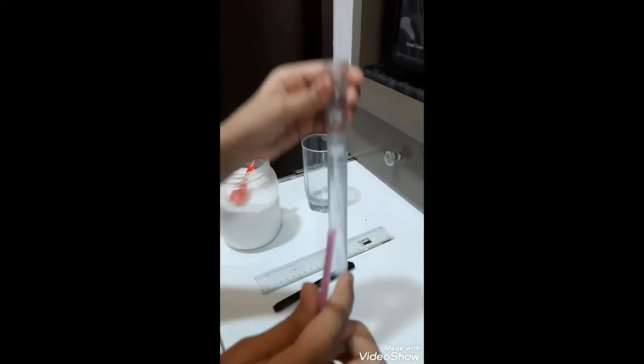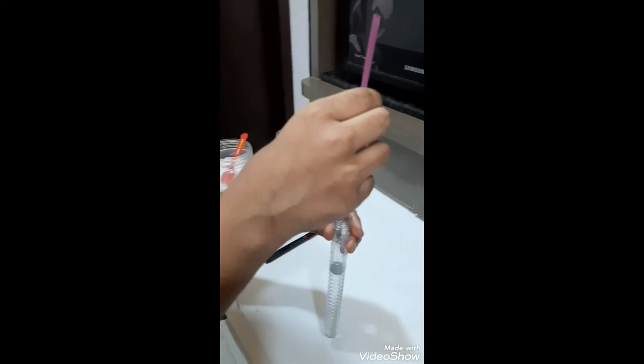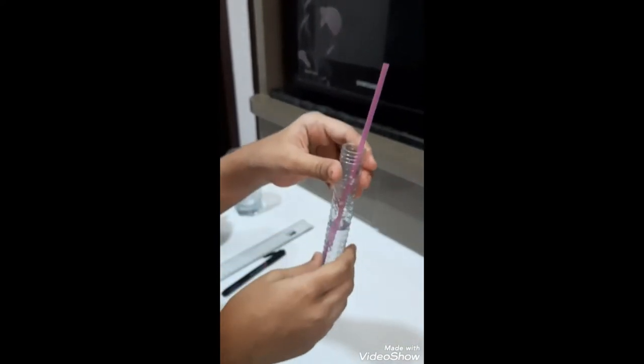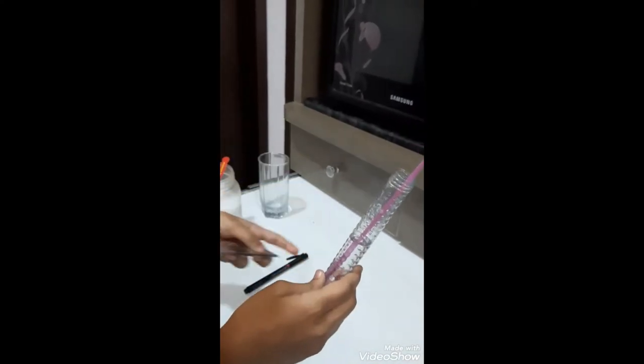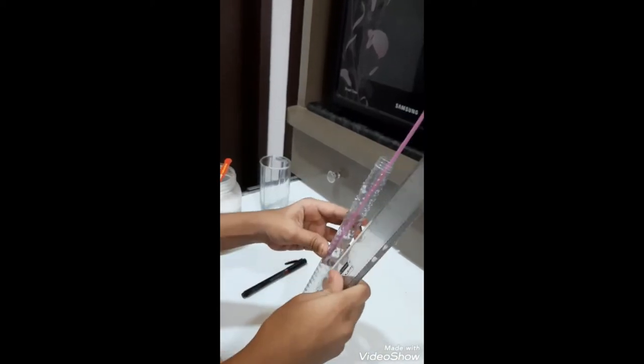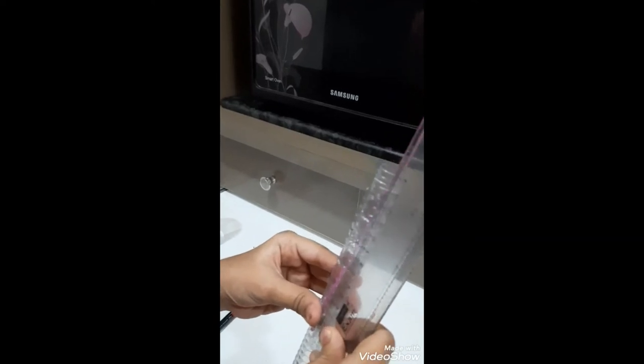Now I'll take the container having the water and I'll place this inside. So now as you can see that this is floating. Now I will measure the length of the straw which is floating down. So for this I'll take my ruler and I'll measure it.